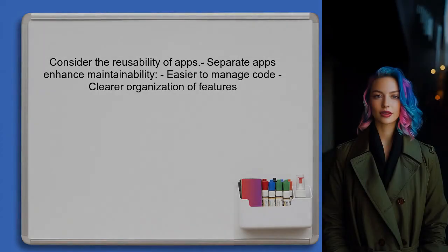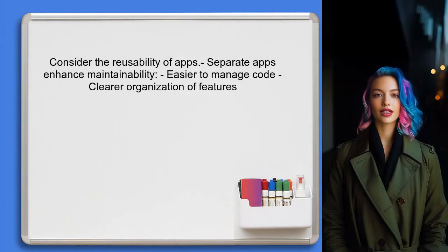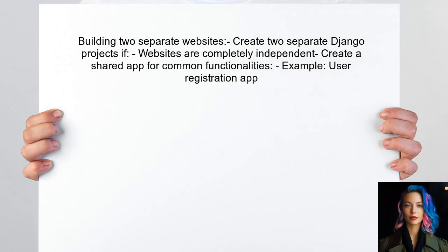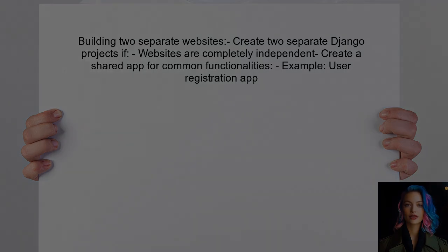Next, consider the reusability of apps. Even if the features are not reused across different projects, separating them into distinct apps can enhance maintainability and organization within the project. If you plan to build two completely separate websites, you should create two separate Django projects. However, if there are shared functionalities like user registration, you can create a shared app that can be included in both projects.